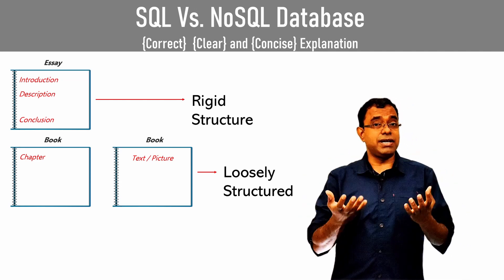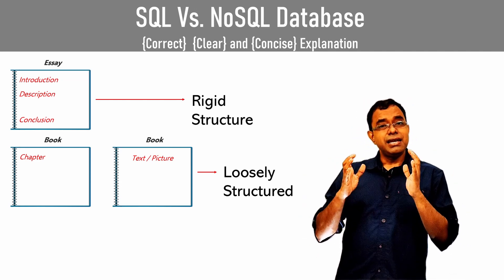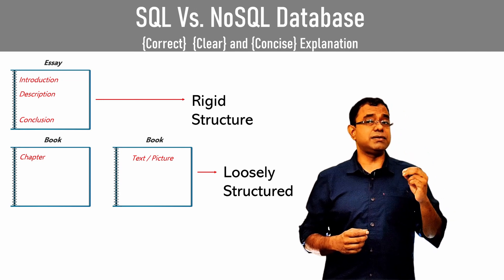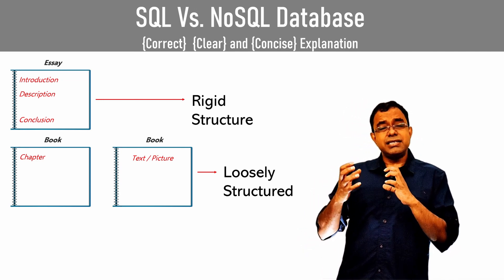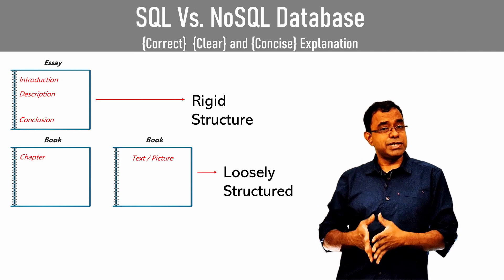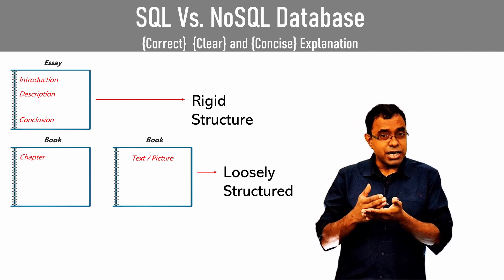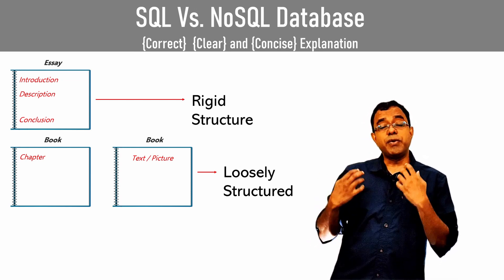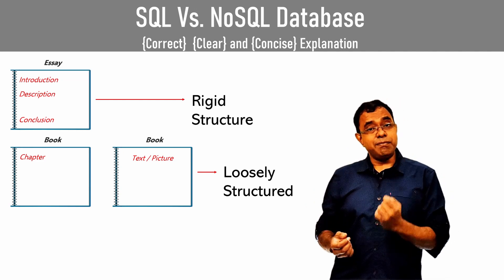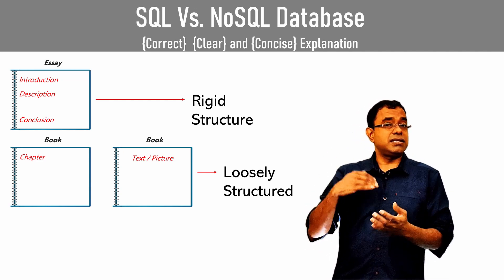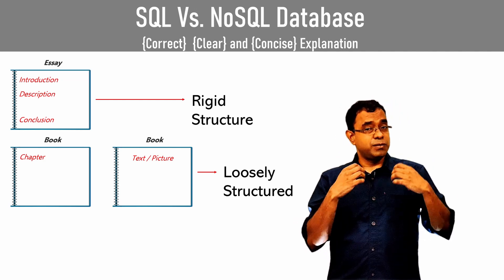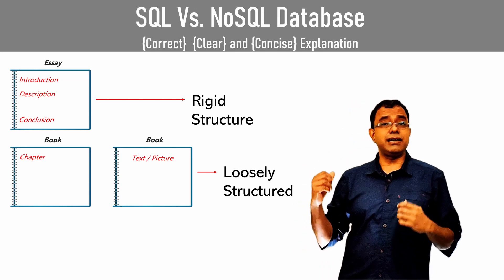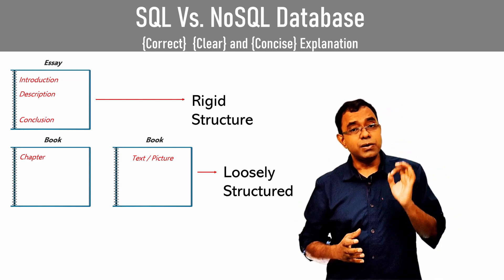On the other hand, the other notebook where you have written a story or autobiography is not following a rigid structure. Yes, it has chapters and belongs to the same title, but it is not very rigid — a chapter can be multiple pages, one page, or even 30 to 40 pages depending upon the book. In some pages, you may add pictures instead of pure text. So if you want to store this kind of data, you will go ahead with a NoSQL database.